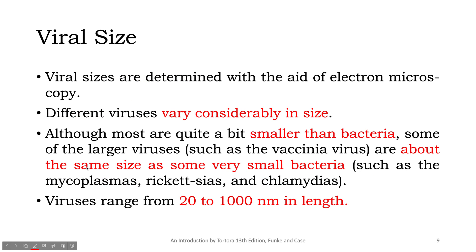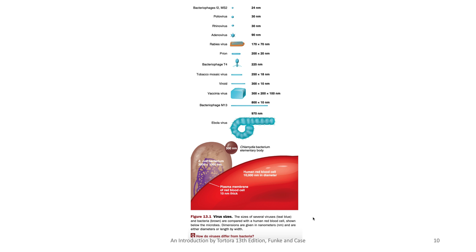Viral size varies considerably — from very small to larger sizes ranging from 20 to 1000 nanometers in length. This pictorial representation shows how a human red blood cell compares in size to E. coli bacterium, down to Chlamydia bacteria at around 300 nanometers, and then to various viruses — from Ebola at 970 nanometers down to bacteriophage MS2 at just 24 nanometers, illustrating how incredibly small bacteriophages are compared to RBCs and E. coli.